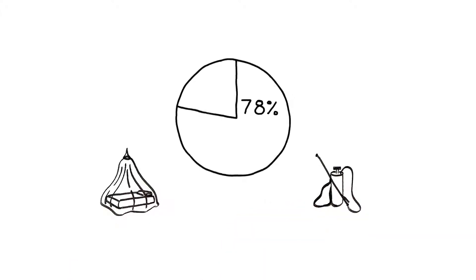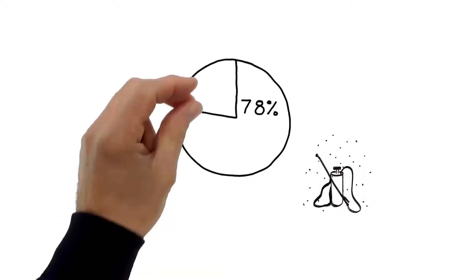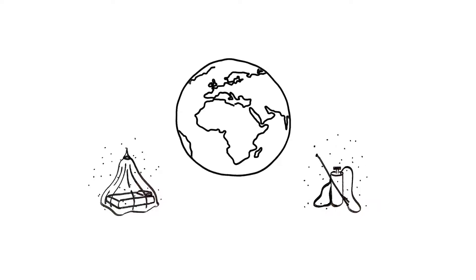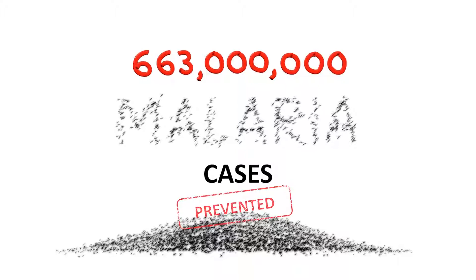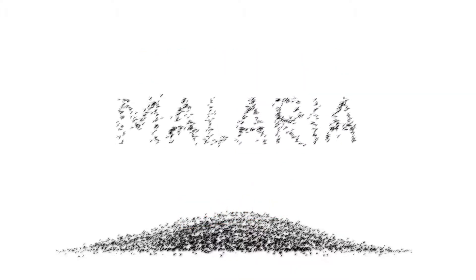But there's a growing problem. Mosquito resistance to the public health insecticides we're using now have been reported in the majority of malaria-endemic countries. This means the huge gains the world has made in reducing malaria deaths since 2000 could quickly be reversed.